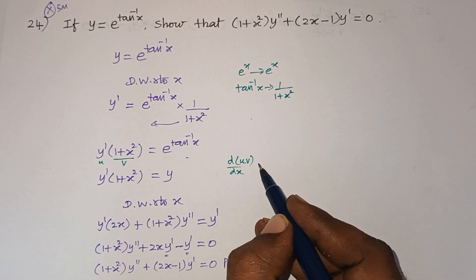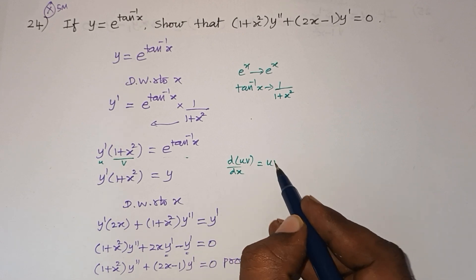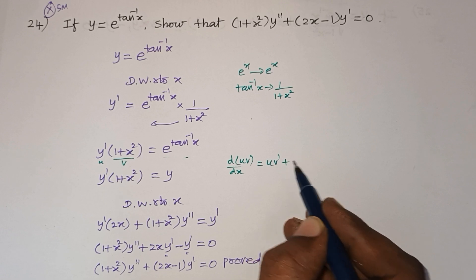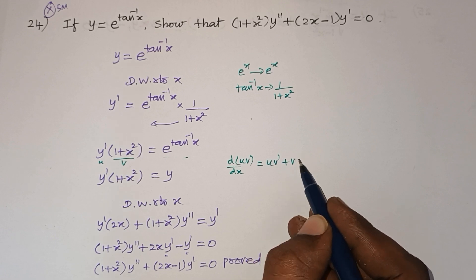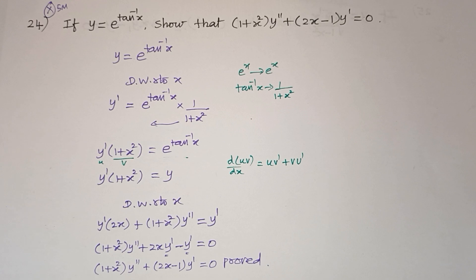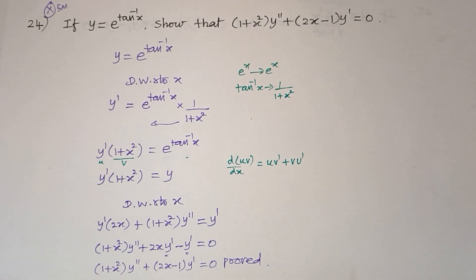Product rule: differentiation of u·v — first function times derivative of second, plus second function times derivative of first: u·v' + v·u'. Final arrangement gives us the required proof. This is a very important sum, so practice it well.